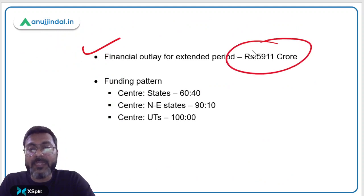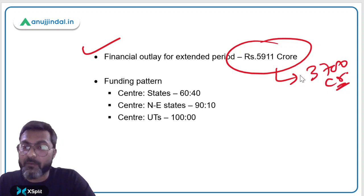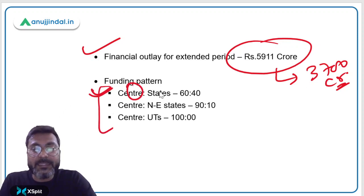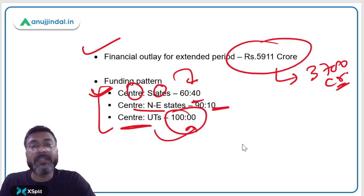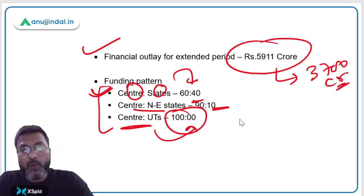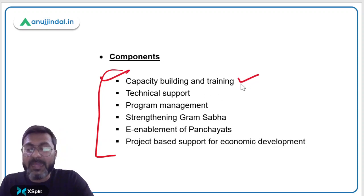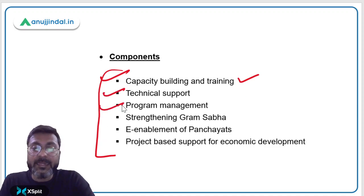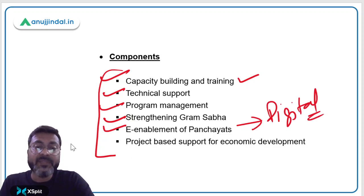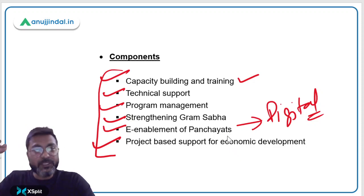For the extended period the financial outlay is 5911 crore, of which the Centre's share is 3700 crore. The funding pattern is 60:40 for normal states, 90:10 for northeastern states, and 100% central funding for Union Territories. Components of the program include capacity building and training for Panchayati Raj institutions, technical support, program management, strengthening of Gram Sabhas, digitalization of Panchayati Raj institutions, and project-based support for economic development.